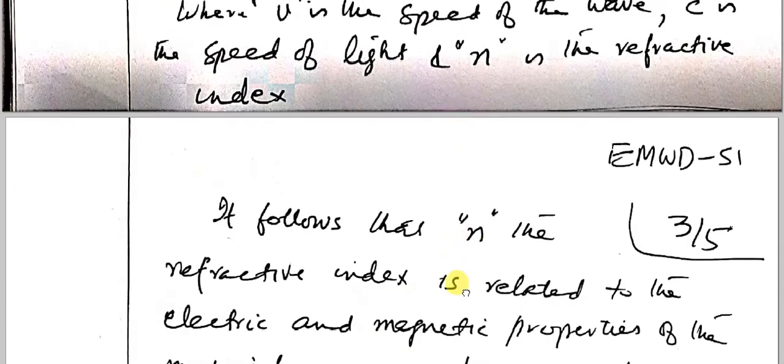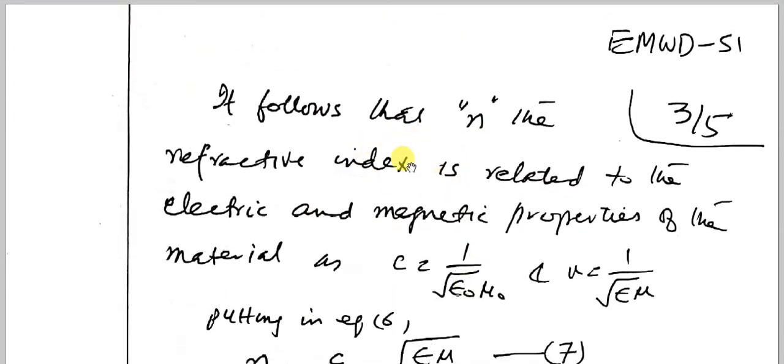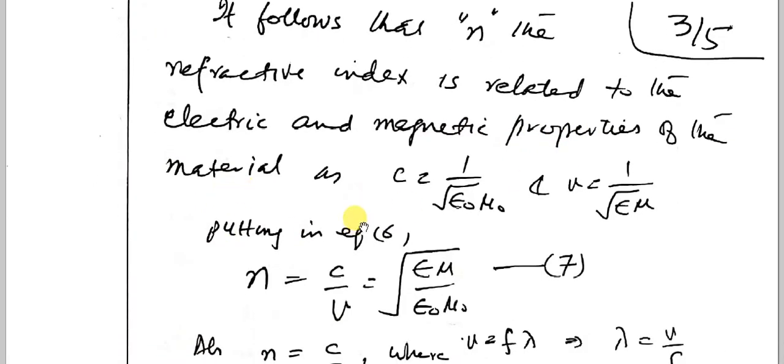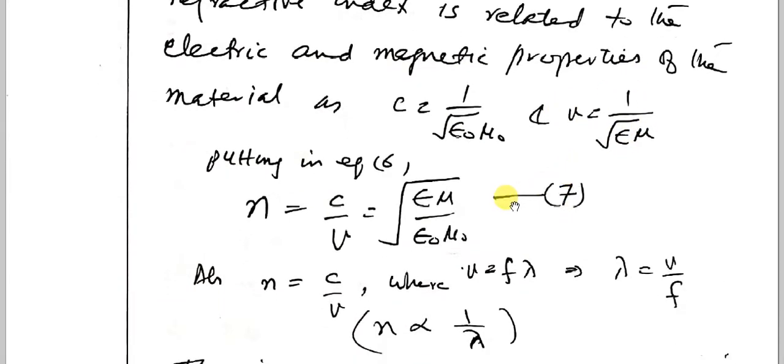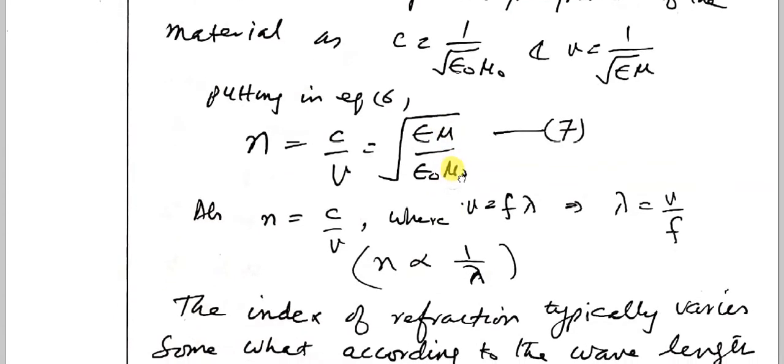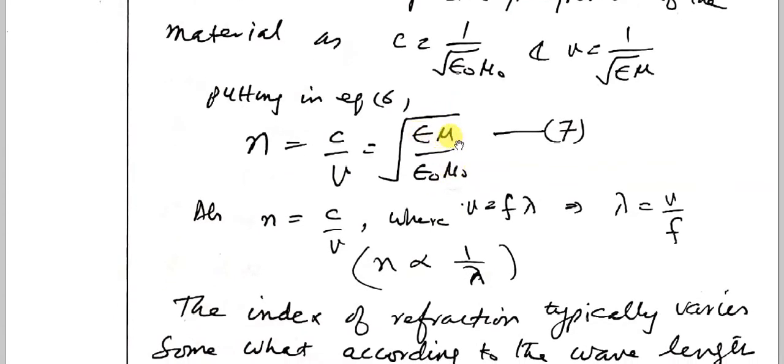It follows that the refractive index n is related to the electric and magnetic properties of the material, because C is one over square root of epsilon naught mu naught, but V is one over square root of epsilon mu. Putting this in equation six, n equals C by V, and simplifying we get square root of epsilon mu over epsilon naught mu naught.